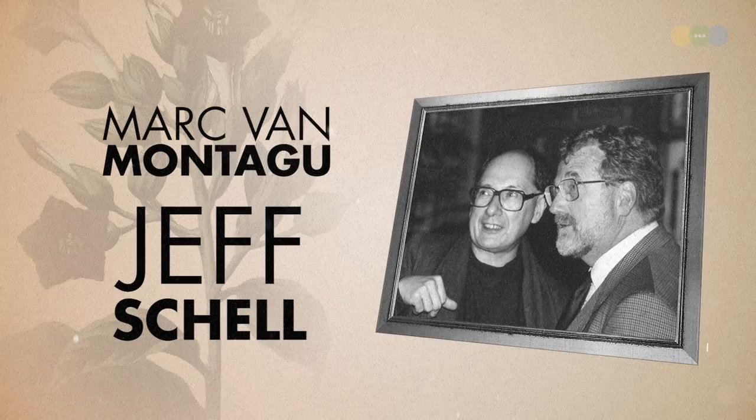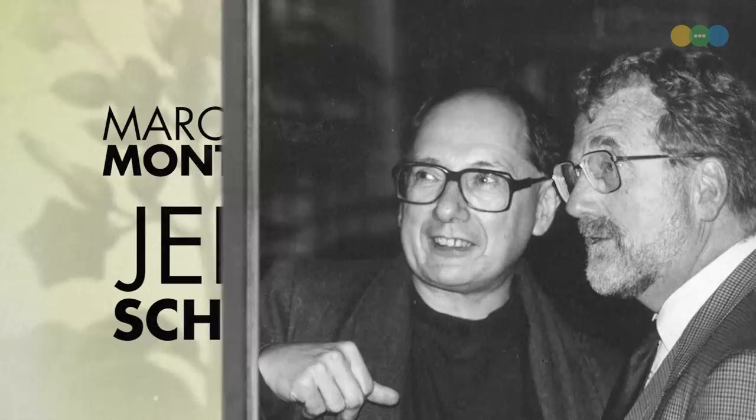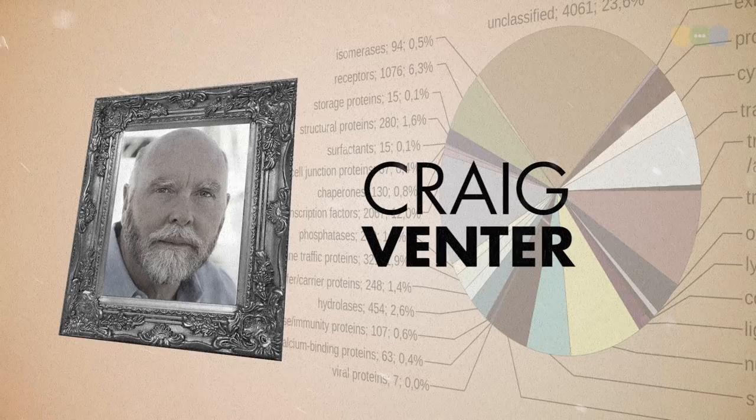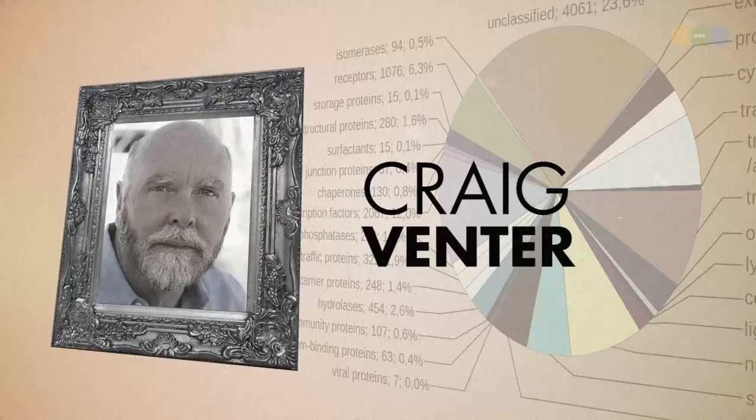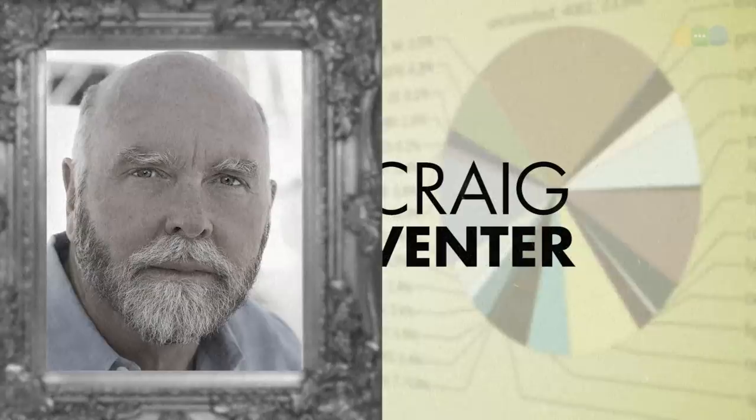Montague and Shell, both Belgian, 1983. They work with the Americans and the French to create the first genetically engineered plant, a variety of tobacco. Venter, American, Y2K. He and his team map the entire human genome, and the tech at the time means many plant and animal genomes are also getting fully mapped.